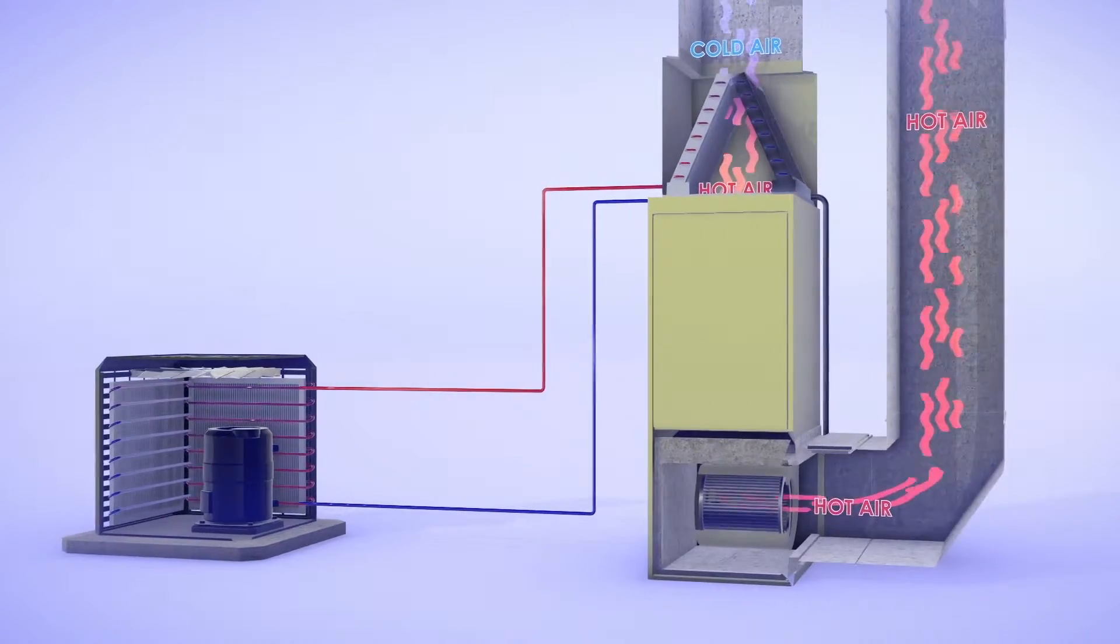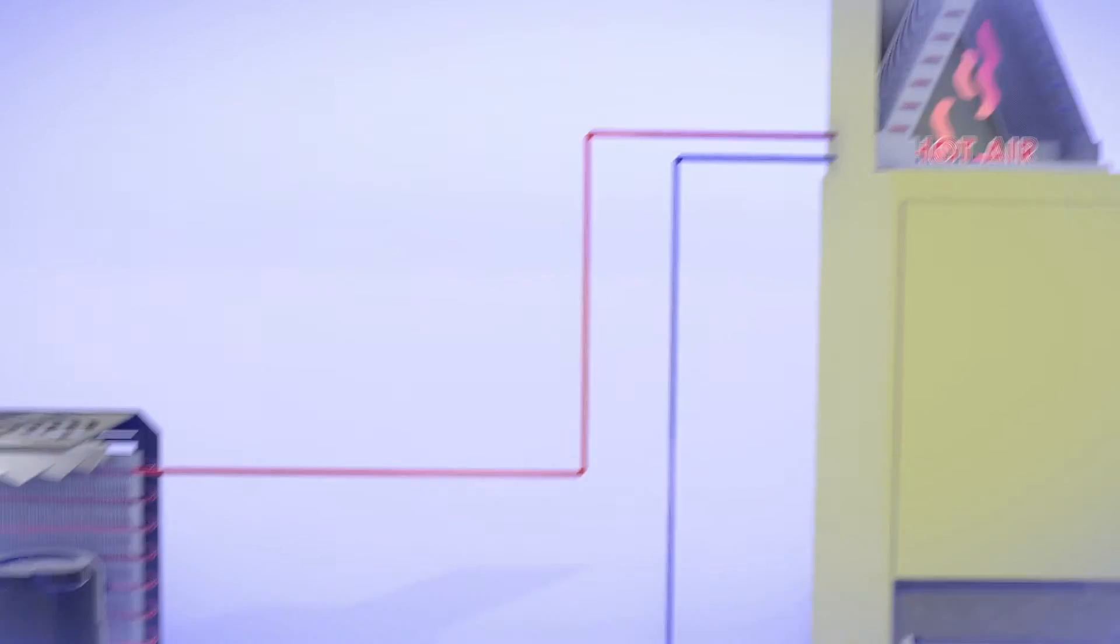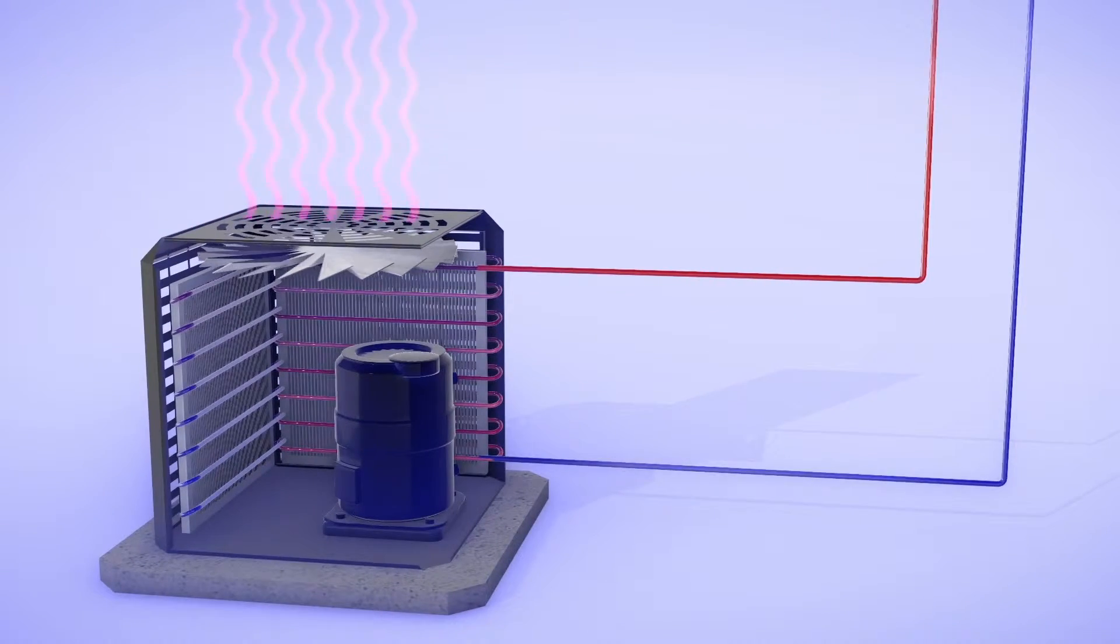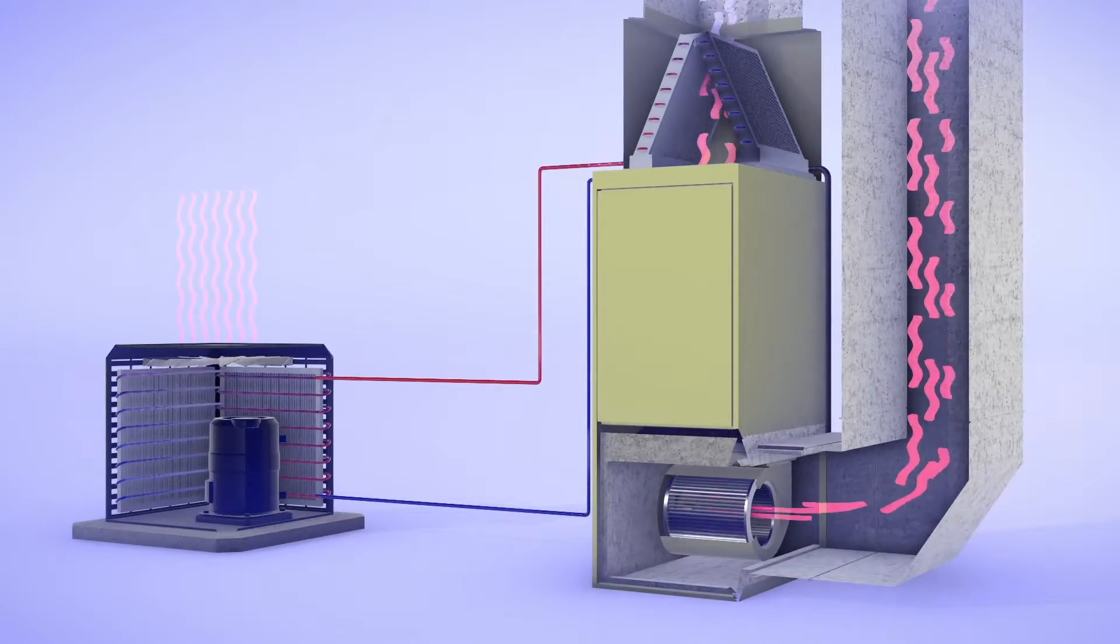The refrigerant acts like a sponge and soaks up heat from the indoor air. It then carries the heat to the outside unit, whose job is to wring the heat out. The process is then repeated over and over until your house is cooled.